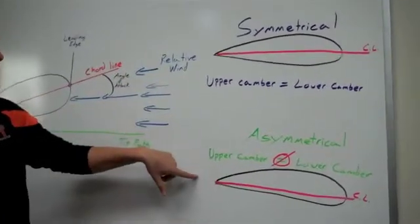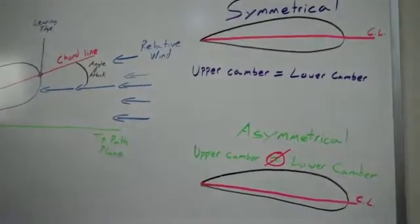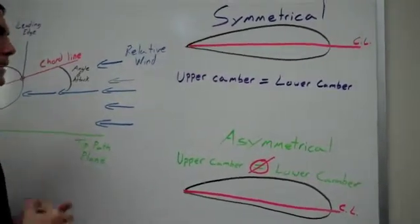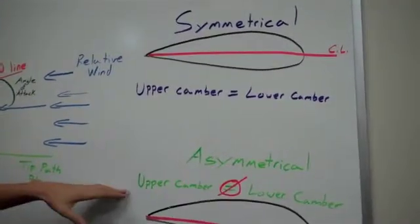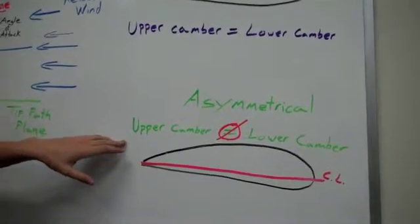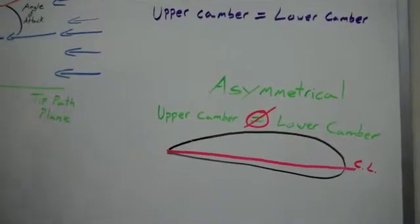We have the symmetrical and then the asymmetrical. The symmetrical has the upper camber and the lower camber that are equal to each other. With the asymmetrical, you can see down here, the upper camber and the lower camber do not equal each other.